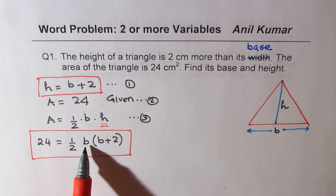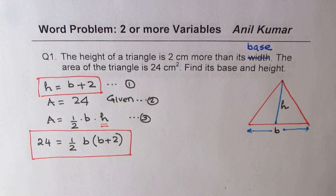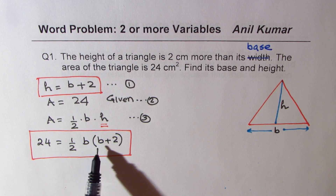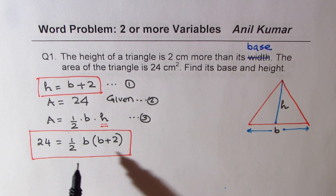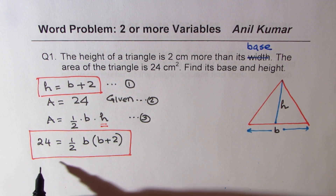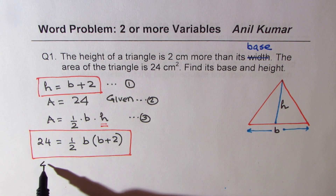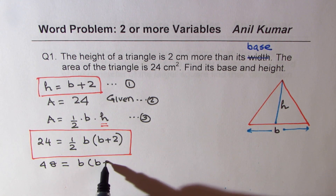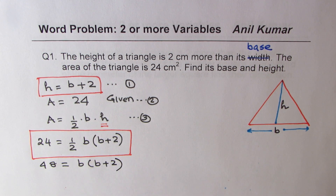This equation is in one variable, which is one unknown, B. How do we solve this equation? Many students have not yet learned quadratic equations, so we can at least cross-multiply. The strategy here is to cross-multiply, so we get 48 equals B times B plus two. Now that is the equation to solve.